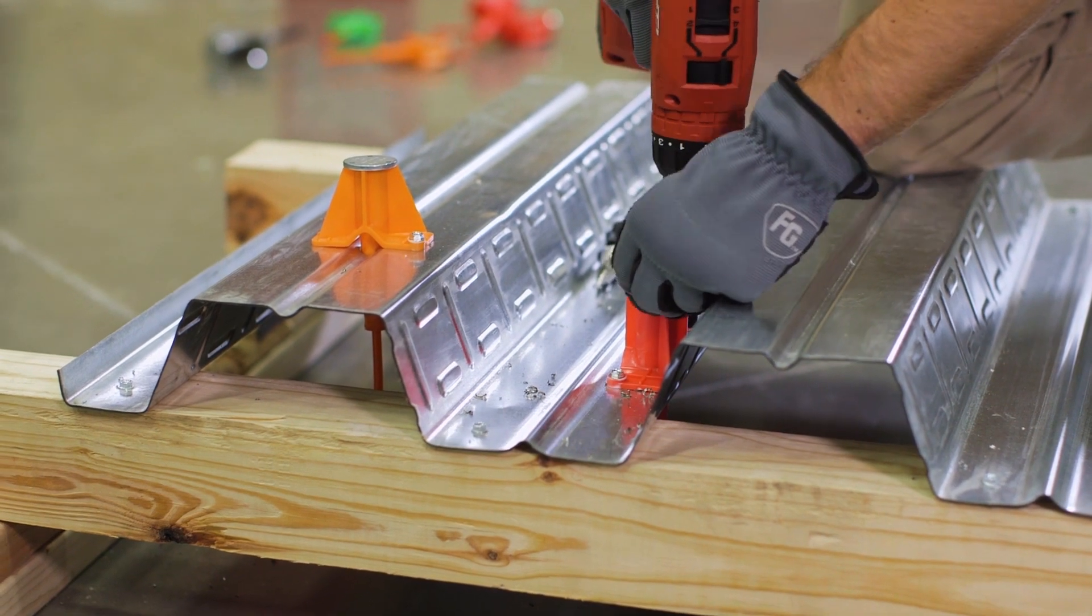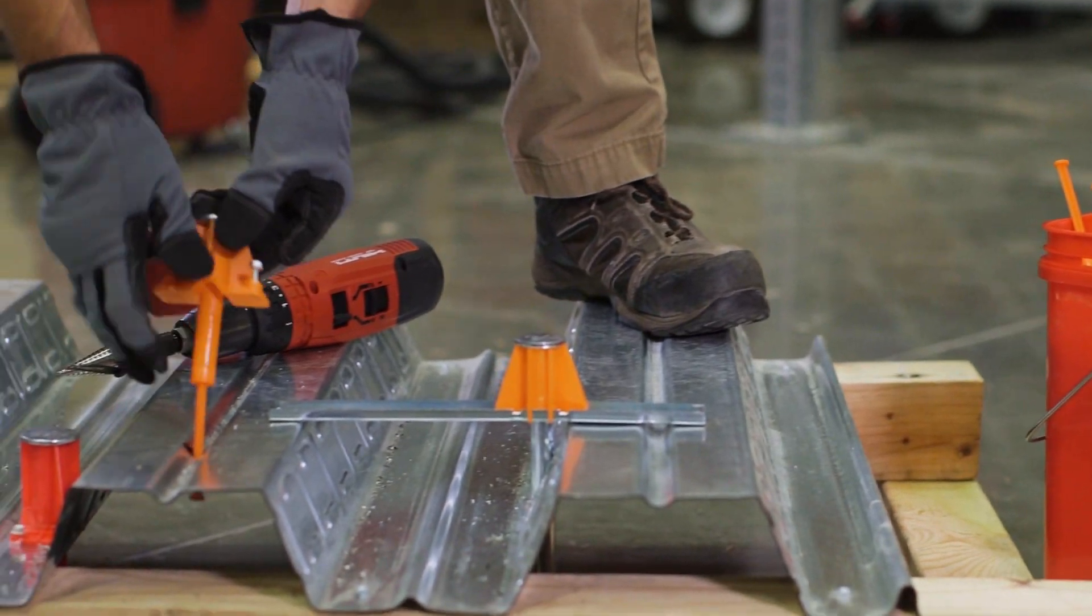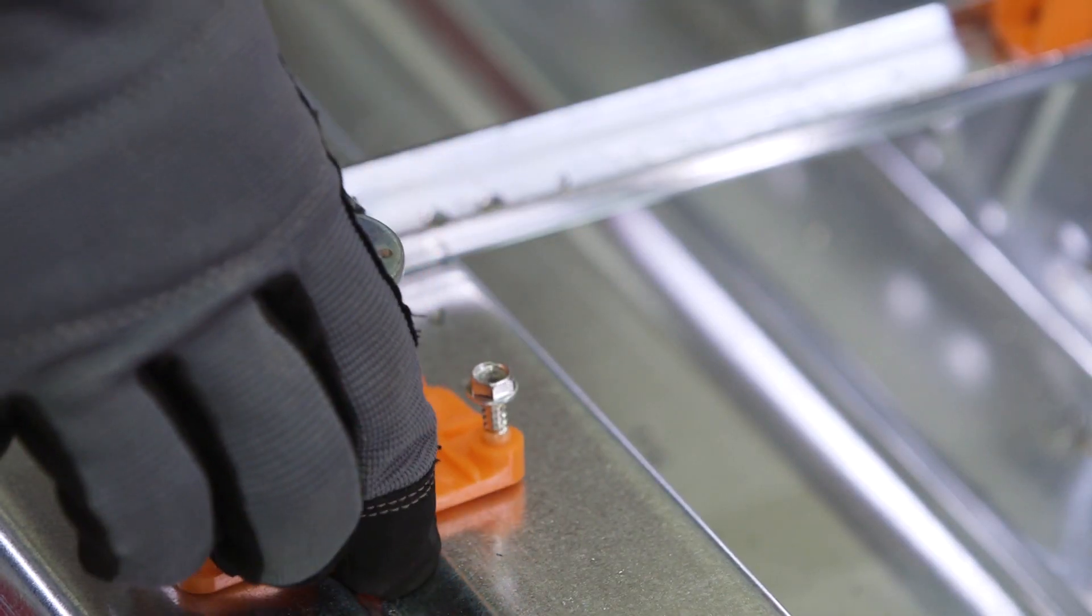No need to hassle with loose screws on the job. Color-coded plastic housing identifies the thread configuration, so you know what size of anchor rod to use.